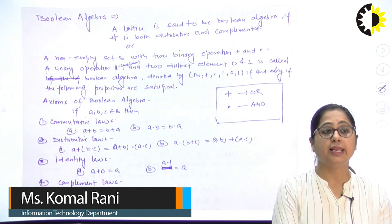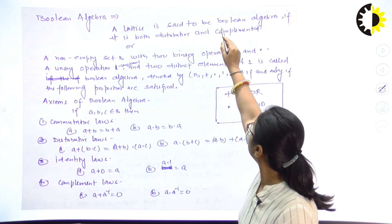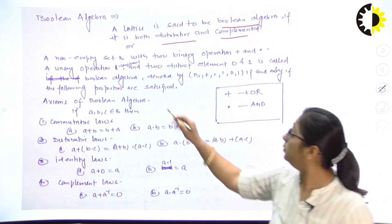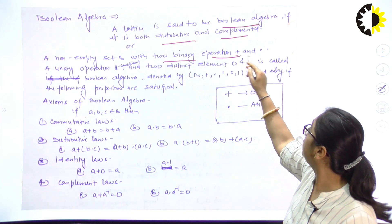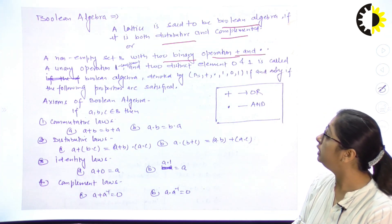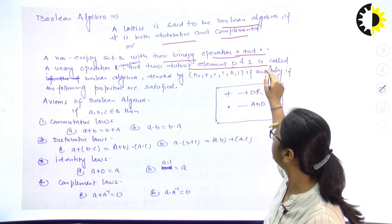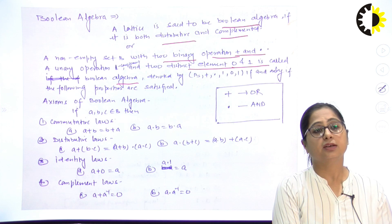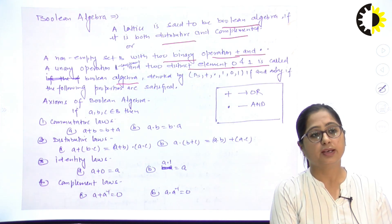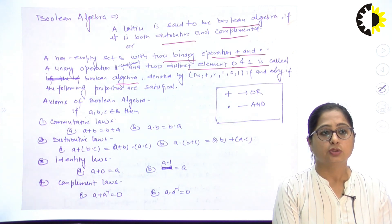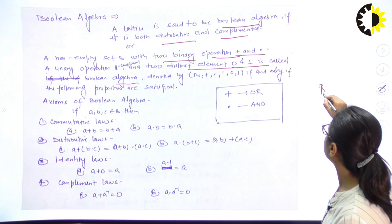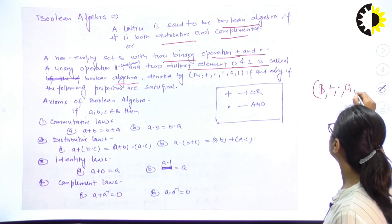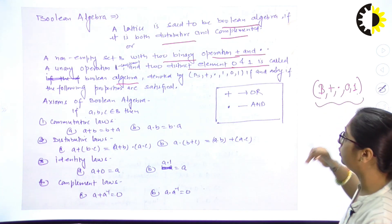What is the definition of Boolean algebra? A lattice is said to be a Boolean algebra if it is both distributed and complemented. Or, a non-empty set B with two binary operations — addition and multiplication — a unary operator complement, and two distinct elements 0 and 1, is called Boolean algebra. In Boolean algebra we deal with two values, that is 0 and 1, or we can say true value or false value. Boolean algebra is denoted by capital B, with two operators addition and dot, and two values 0 and 1.